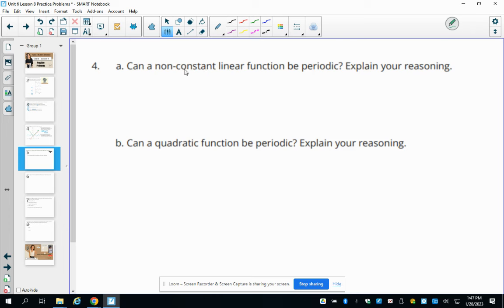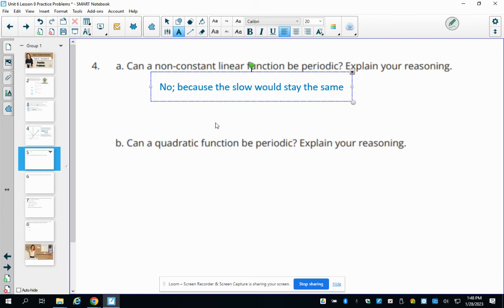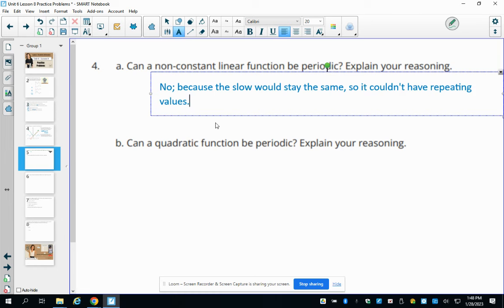Number four, can a non-constant linear function be periodic? Explain your reasoning. So a non-constant linear. So it's just going to be a straight line, just not straight across. So not horizontal. And no, this couldn't be periodic, because the slope would stay the same. So it couldn't have repeating values.